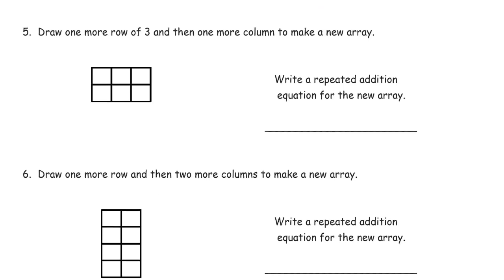One more row of three, and then one more column. So here's a row, another row of three, and then one more column, which now this column will have three in it because there's that other row. And a repeated addition equation for the new array. Well, we added a row and we added a column, so it really doesn't matter what we do here.